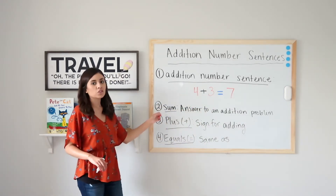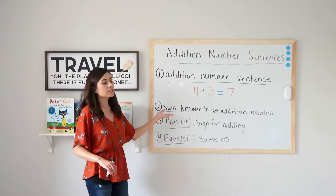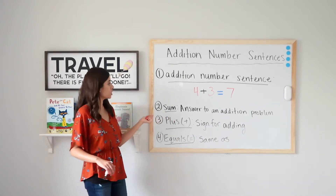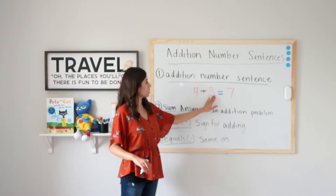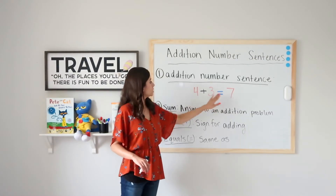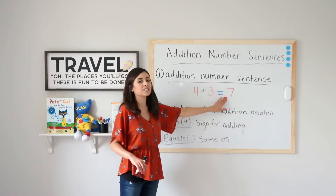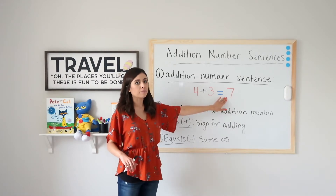Number two: sum. Sum is the answer to an addition problem. So if I have four plus three equals seven, seven is our sum.